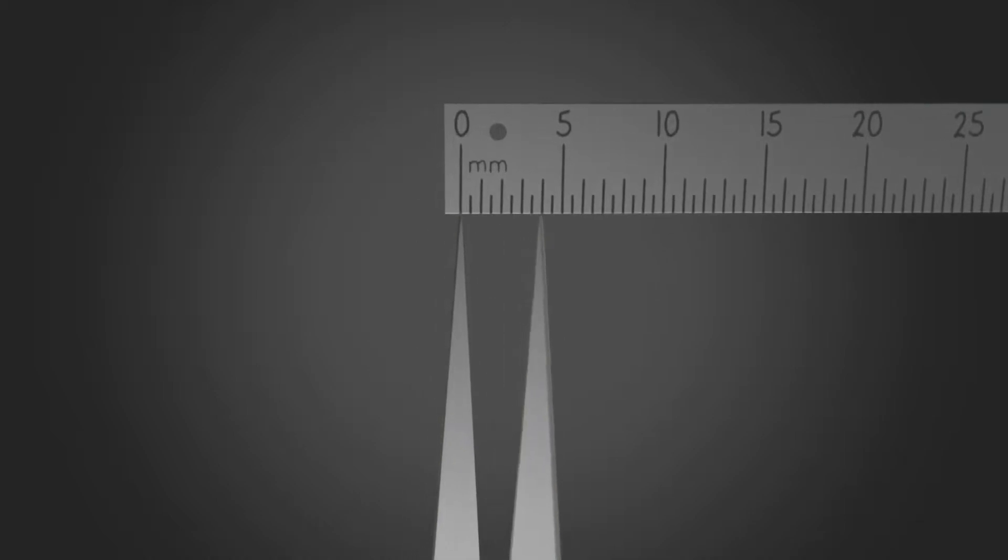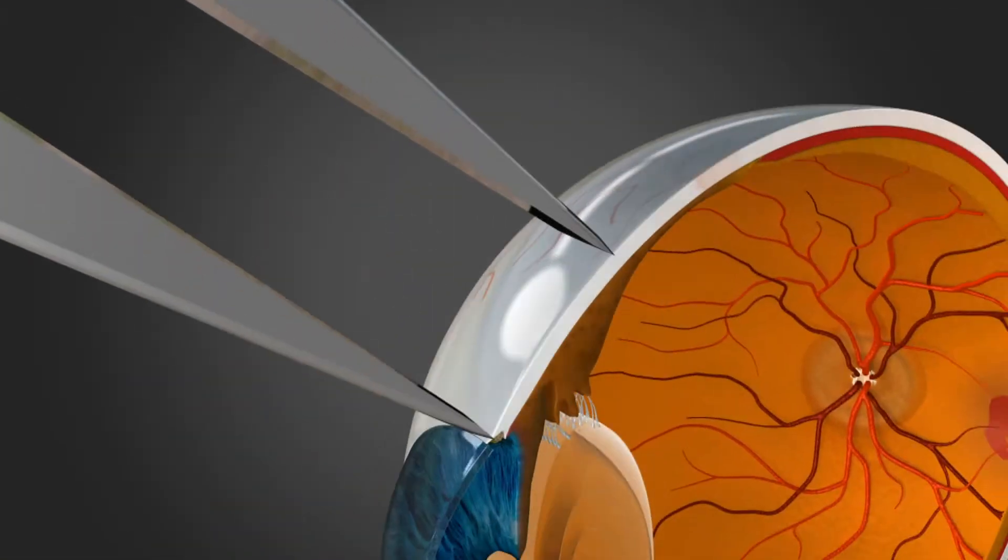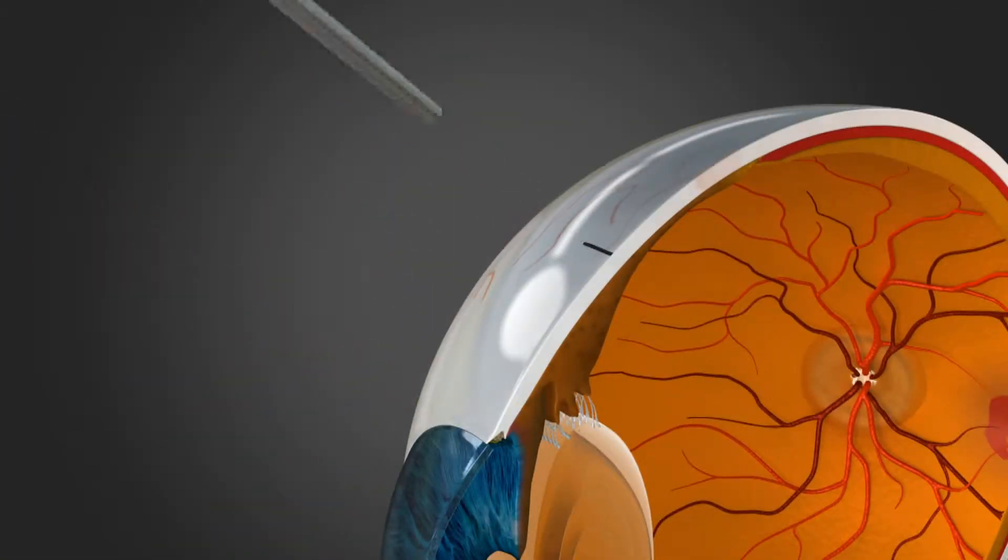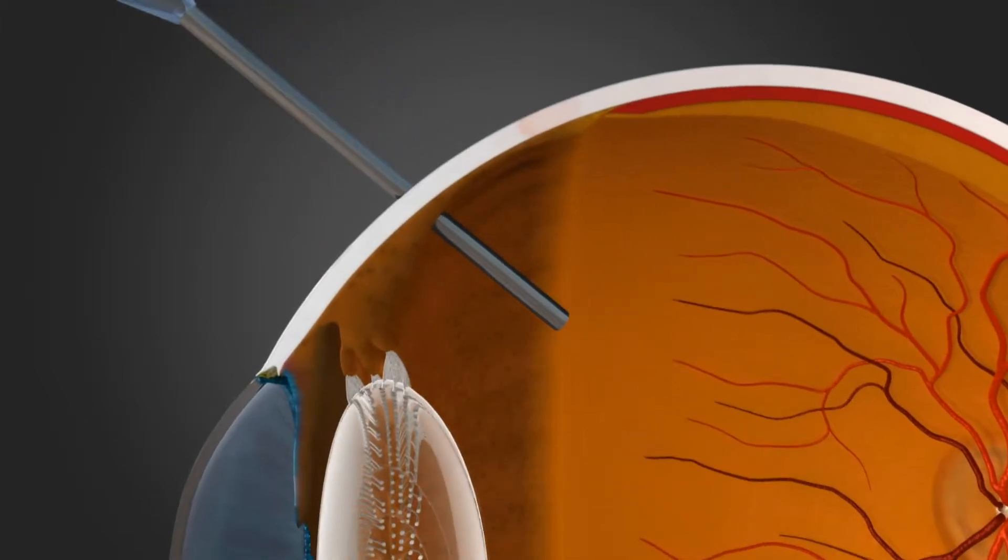we carefully measure 3-4 mm from the limbus and insert a small needle into the space between the back of the lens and the front of the retina.